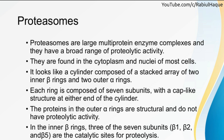Each ring is composed of seven subunits with a cap-like structure at either end of the cylinder. The proteins in the outer alpha rings are structural — they provide structural support to the proteasome but do not have any proteolytic activity. In the inner beta ring, three of the seven subunits — namely beta 1, beta 2, and beta 5 — are catalytic sites for proteolysis. So cytosolic proteins will be digested inside the proteasomes, generating peptides. That was the first step.